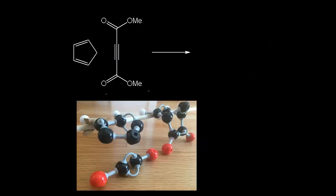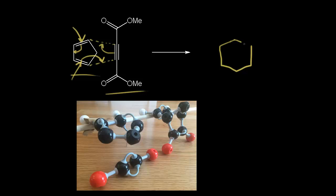For this next problem, we have the same dienophile but a different diene — cyclopentadiene, where both double bonds are cis. When we think about our Diels-Alder reaction, we move our six pi electrons: these pi electrons move into here to form a bond between these two carbons, these pi electrons move into here to form a bond between these two carbons, and these pi electrons move over to here. Drawing our product, let me draw in this ring and highlight those electrons. The red electrons moved into here, the blue pi electrons moved into here, and the magenta pi electrons moved over to here. We still have a bridging CH₂.